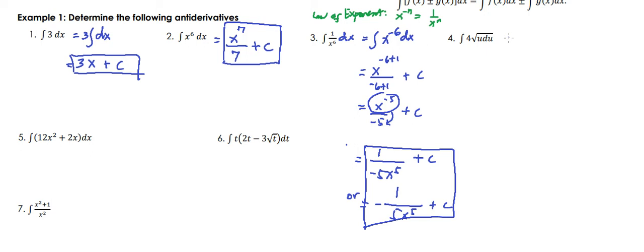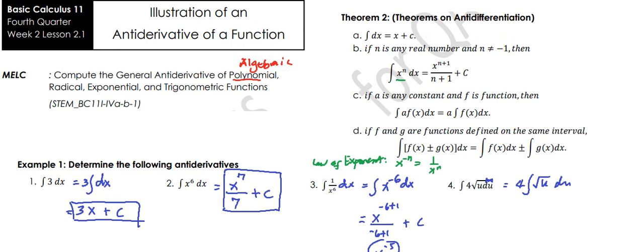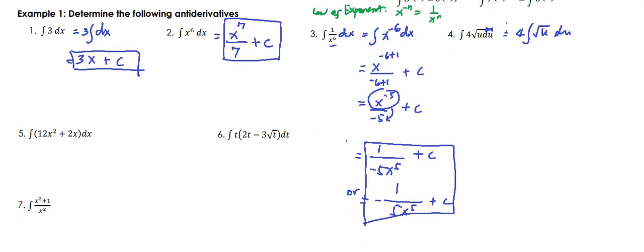Number four: integral of 4 times the square root of u du. The variable here is u instead of x, which is fine. We move the constant 4 outside the integral: 4 times the integral of the square root of u du. We have no theorem for radicals directly, so like we did in number 3, we change this into a power. The square root of u is equal to u raised to one half, because the index is 2 and the power of u is 1. Similarly, the cube root of u would give u raised to one third.